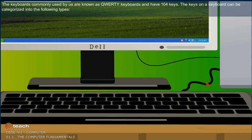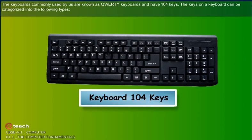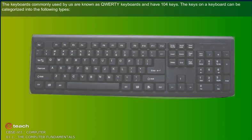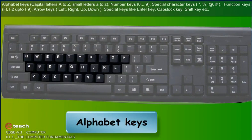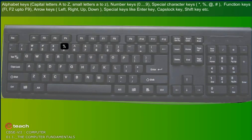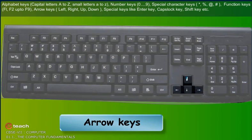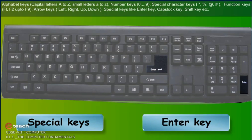The keyboards commonly used by us are known as QWERTY keyboards and have 104 keys. The keys on a keyboard can be categorized into: alphabet keys (capital letters A to Z, small letters a to z), number keys (0 to 9), special character keys (star, percentage, at, hash), function keys (F1, F2 up to F12), arrow keys (left, right, up, down), and special keys like Enter key, Caps Lock key, Shift key, etc.